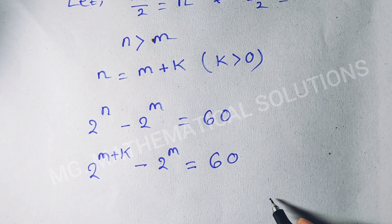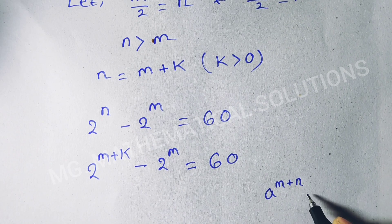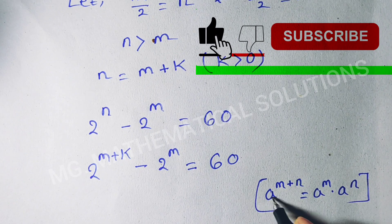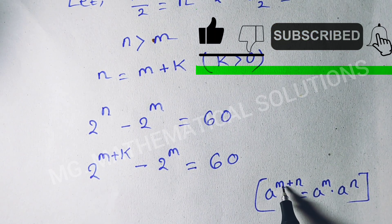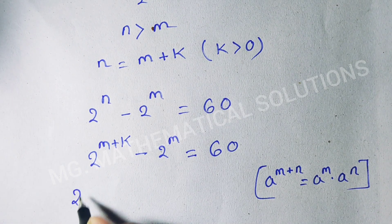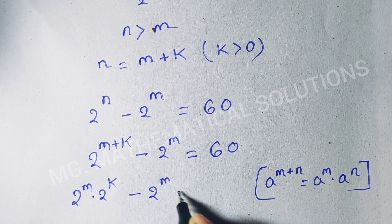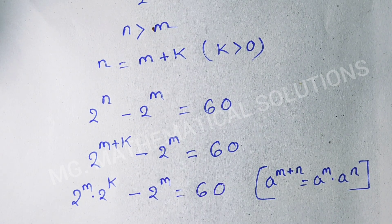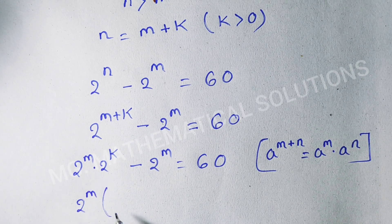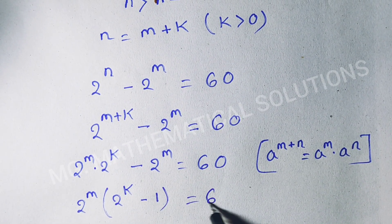Now we use the formula a to the power m plus n equal to a to the power m times a to the power n. Here a means 2, so 2 to the power m times 2 to the power k minus 2 to the power m equal to 60. Now we take common 2 to the power m, so 2 to the power m times the quantity 2 to the power k minus 1 equal to 60.